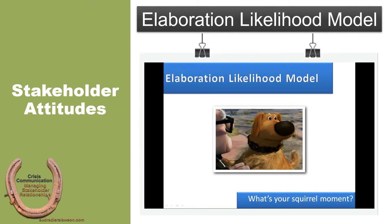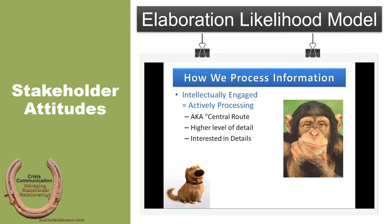When people process information, we do so in one of two ways. The first is our central route. The bottom line with the central route is that we want to listen — we're paying attention to details. Whatever the topic or issue is, it has our full attention and we are engaged.